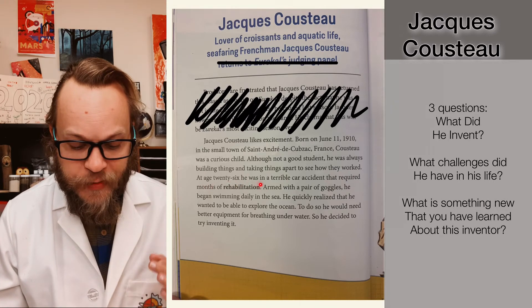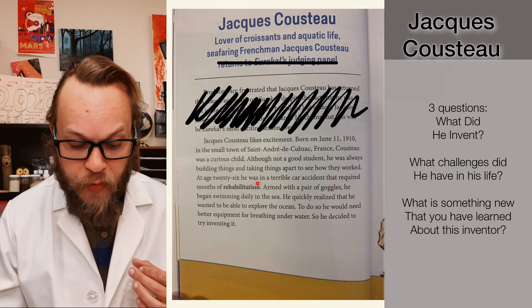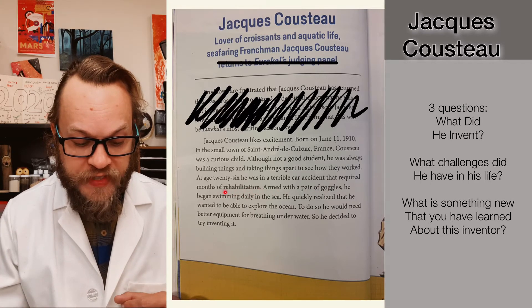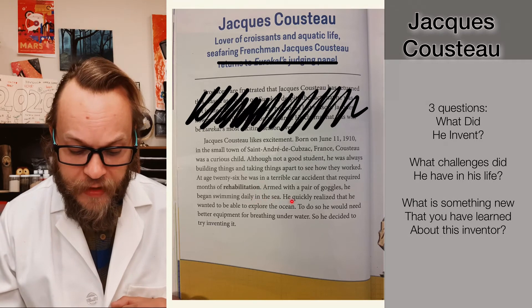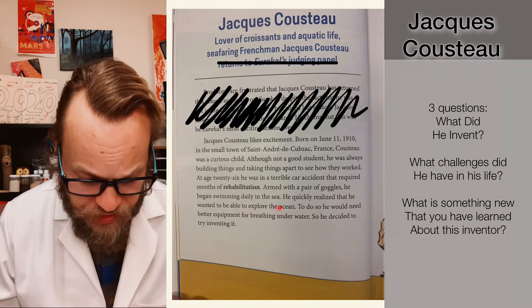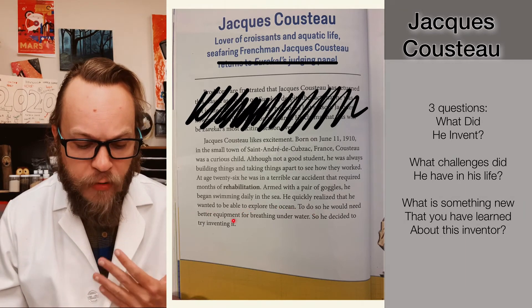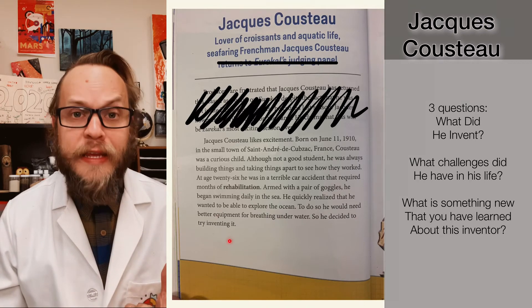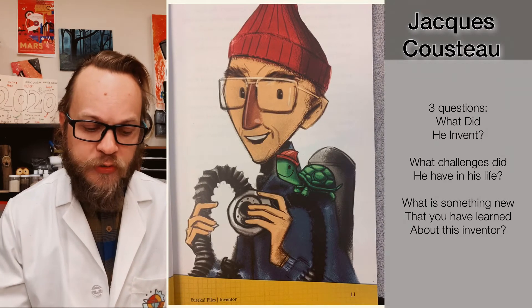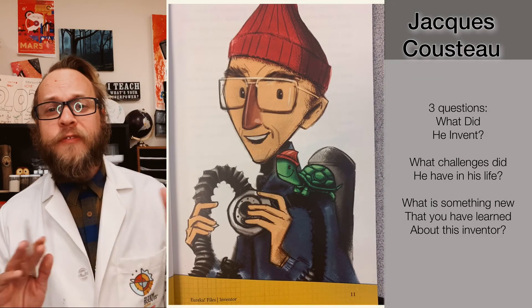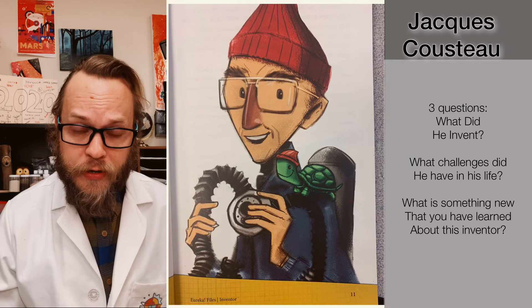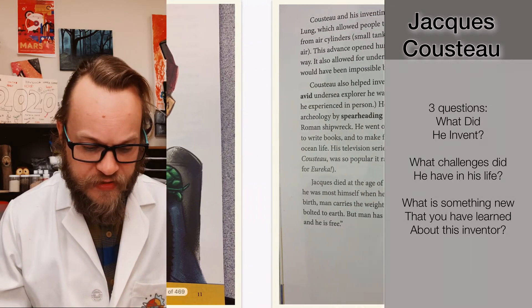At age 26, he was in a terrible car accident that required months of rehabilitation. Armed with a pair of goggles, he began swimming daily out in the sea. He quickly realized that he wanted to be able to explore the ocean, and to do so he would need better equipment for breathing underwater, so he decided to try to invent it. Here we have a picture of Jacques Cousteau in his famous red beanie. He did a lot of documentaries where he would film himself underwater in all of his gear, such as diving tanks and so forth.